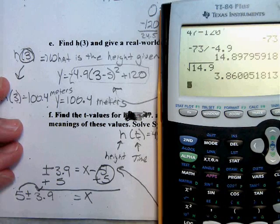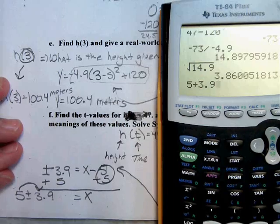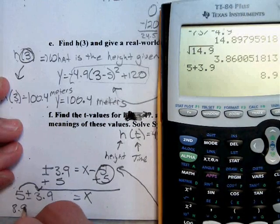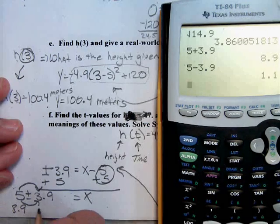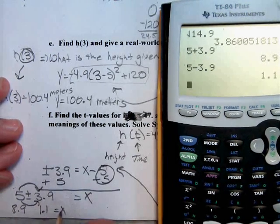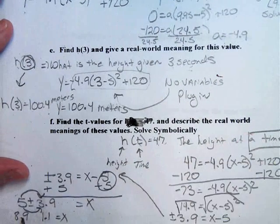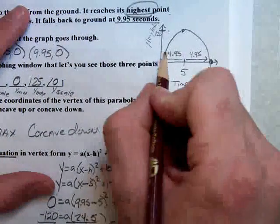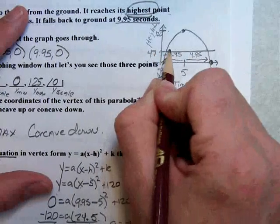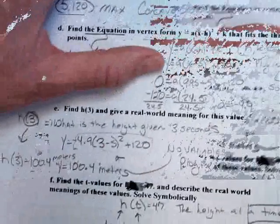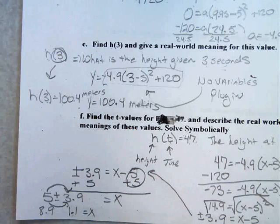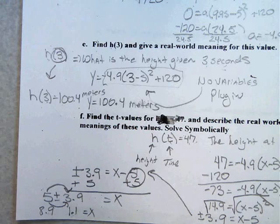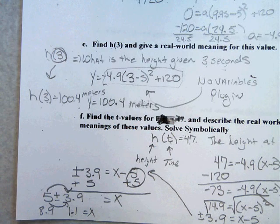x comes out and we get 5 plus or minus 3.9. That gives us two different answers 5 plus 3.9 and you should be able to figure that one out pretty quick. 5 plus 3.9 enter, that's going to give us our 8.9. And we also have this answer right here 5 minus 3.9 which is 1.1. And you can see why we were solving vertex form. Remember our answers are 8.9 and 1.9 and the height was 47. If we were to guess 47, those would be our intersections which would be pretty close to 1.1 and 8.9.